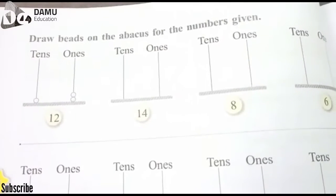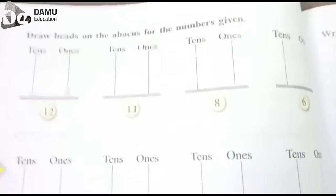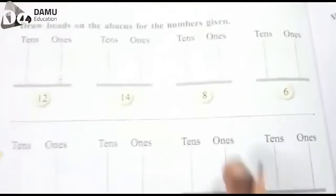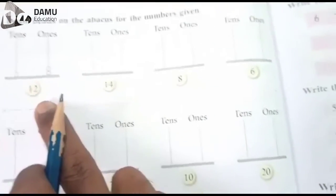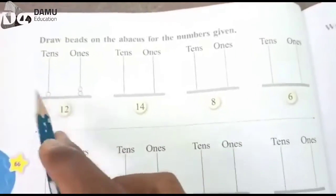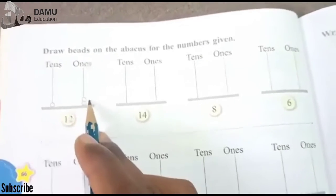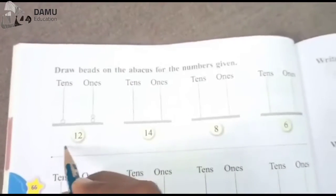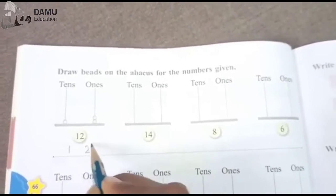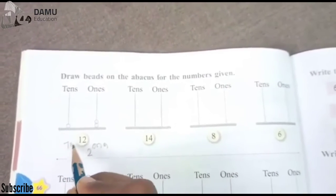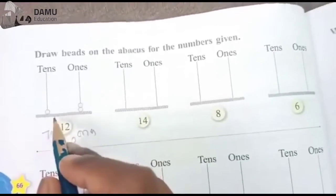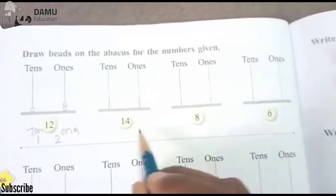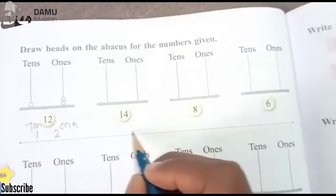Come to page number 66. Here they are asking us to draw beads on the abacus for given numbers. For 12, draw two beads in the ones place and one bead in the tens place. For 14, draw four beads in the ones place and one bead in the tens place.